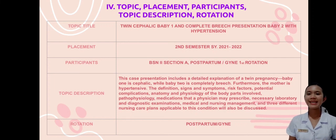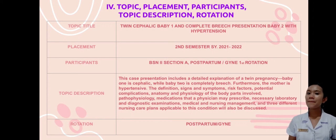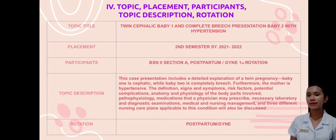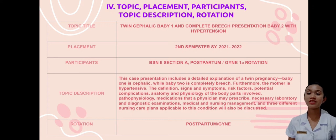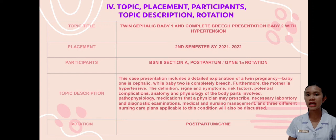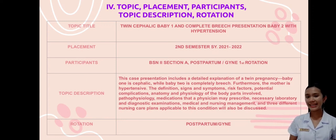Topic description: this case presentation includes a detailed explanation of the twin pregnancy — Baby 1 is cephalic while Baby 2 is completely breached — and furthermore the mother is hypertensive. The definition, signs and symptoms, risk factors, potential complications, anatomy and physiology of the body parts involved, pathophysiology, medications, necessary laboratory and diagnostic examinations, medical and nursing management, and three different nursing care plans applicable to this condition will also be discussed. The rotation is postpartum or gynae rotation.